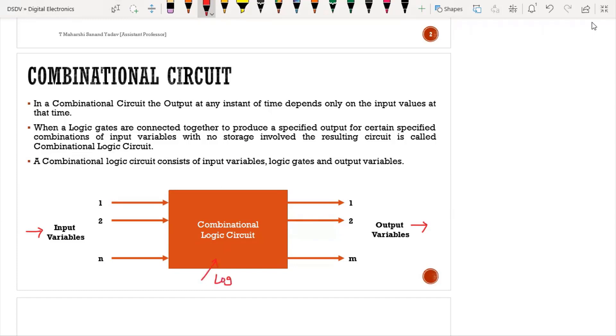What does this combinational logic circuit contain? This combinational logic circuit contains logic gates. When logic gates are connected together to produce a specified output for certain specified combinations of input variables with no storage involved, the resulting circuit is called a combinational circuit.